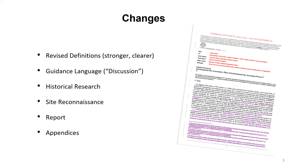What you'll find through my presentation and reading the new phase one is that we've revised a number of definitions and added some new terminology. We've tried to bolster some discussion to assist in the interpretation of various aspects of the standard. There have been some limited changes to the historical research and site reconnaissance sections. We've added some important appendices that help provide guidance on how you determine a recognized environmental condition and what that process looks like, with examples. We've also made some changes to what we envision as the report format and what needs to be included in the conclusion section.